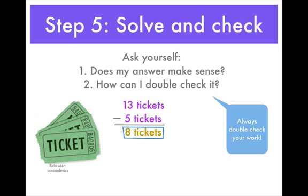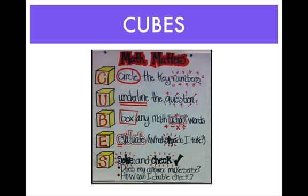But don't forget — always solve and check. Does my answer make sense? How can I double check my answer? Let's redo that: check your work again, 13 minus 5 equals 8 tickets. Or you could even go backwards: 8 plus 5 equals 13. So there you go, you have your answer. Always use CUBE to solve any word problem — circle, underline, box, evaluate, solve, and check. You can solve any problem using this strategy.